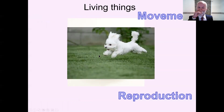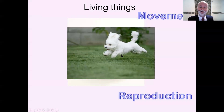There's a puppy having a run around. This is movement. Movement obviously can happen for animals like dogs or humans, but actually all living things are capable of movement.